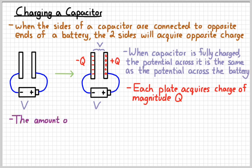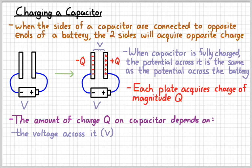Now the amount of charge that actually gets collected on the capacitor is going to depend on two things. One is the voltage across it. Obviously the higher the voltage is, the more charge you can put on each plate, the more energy you have available.